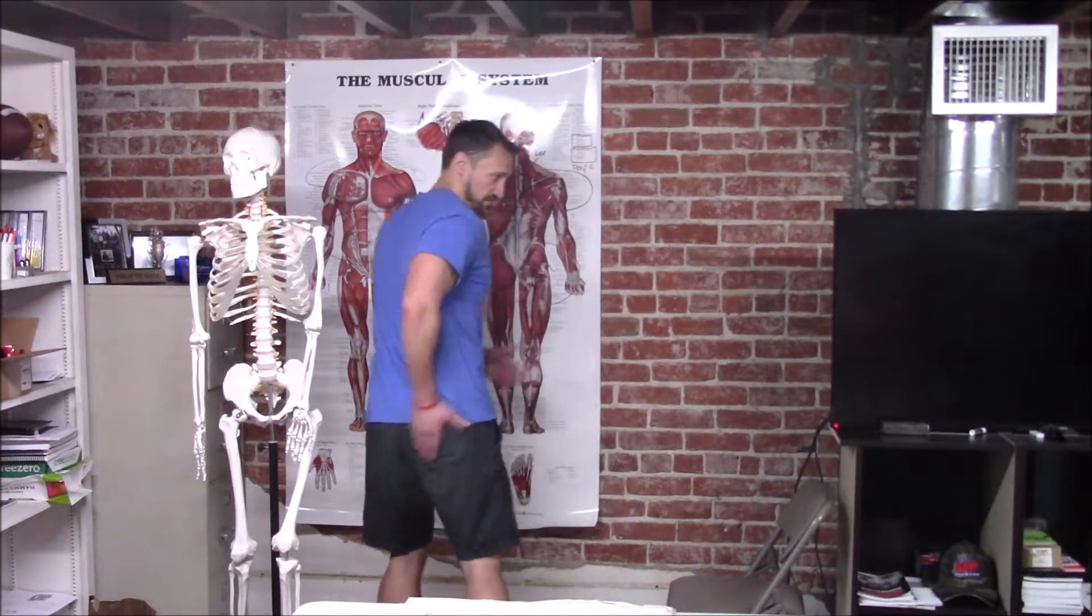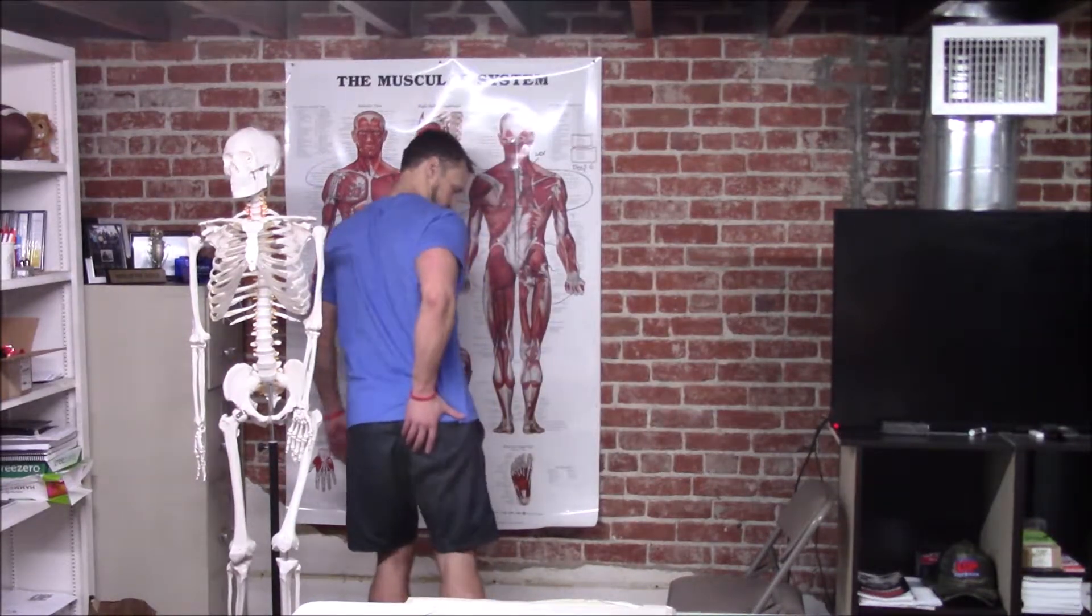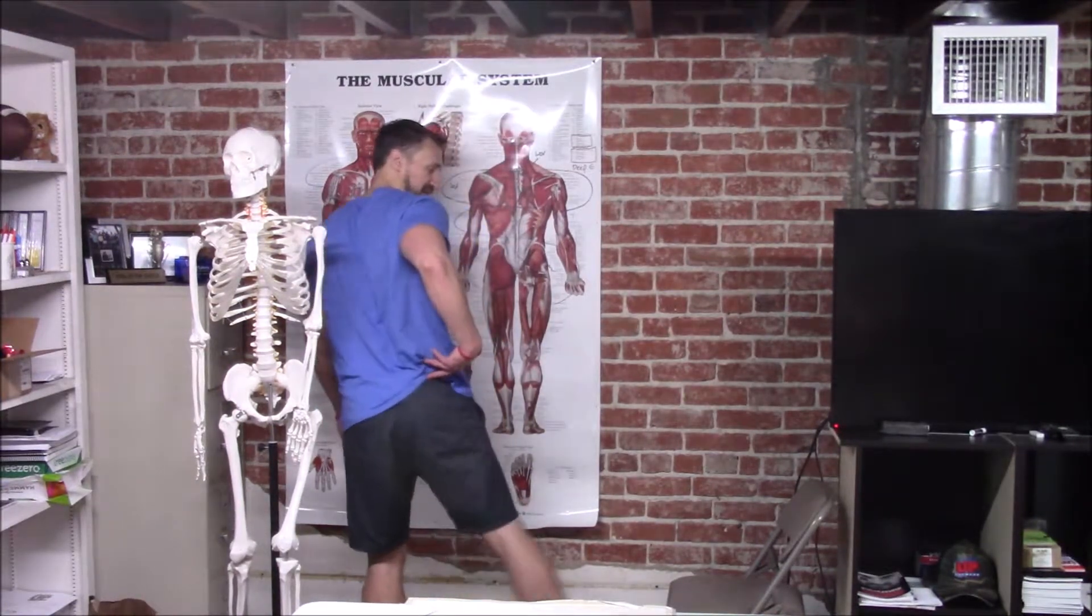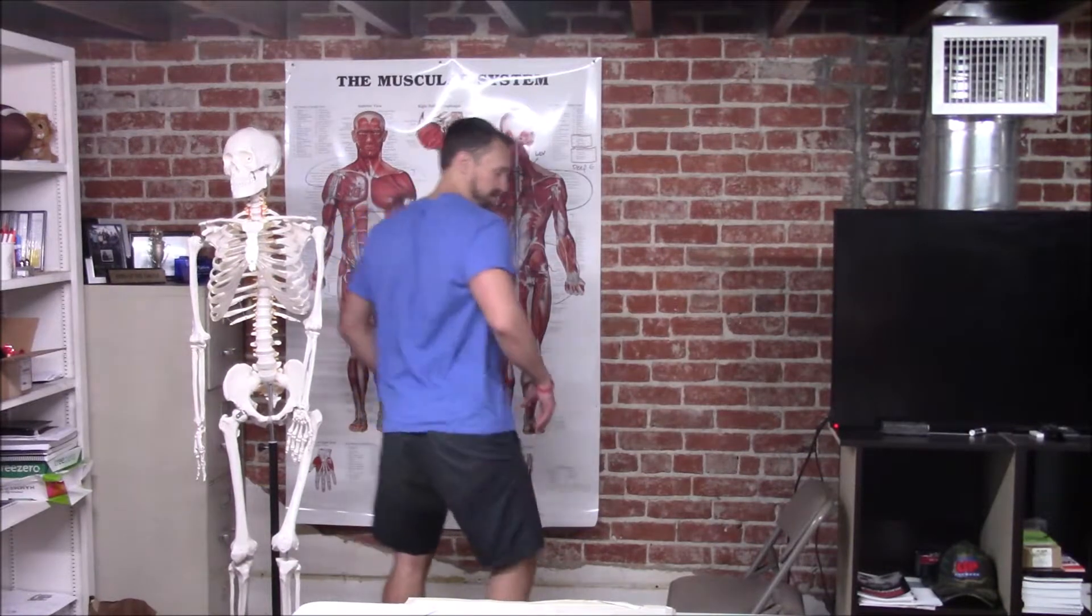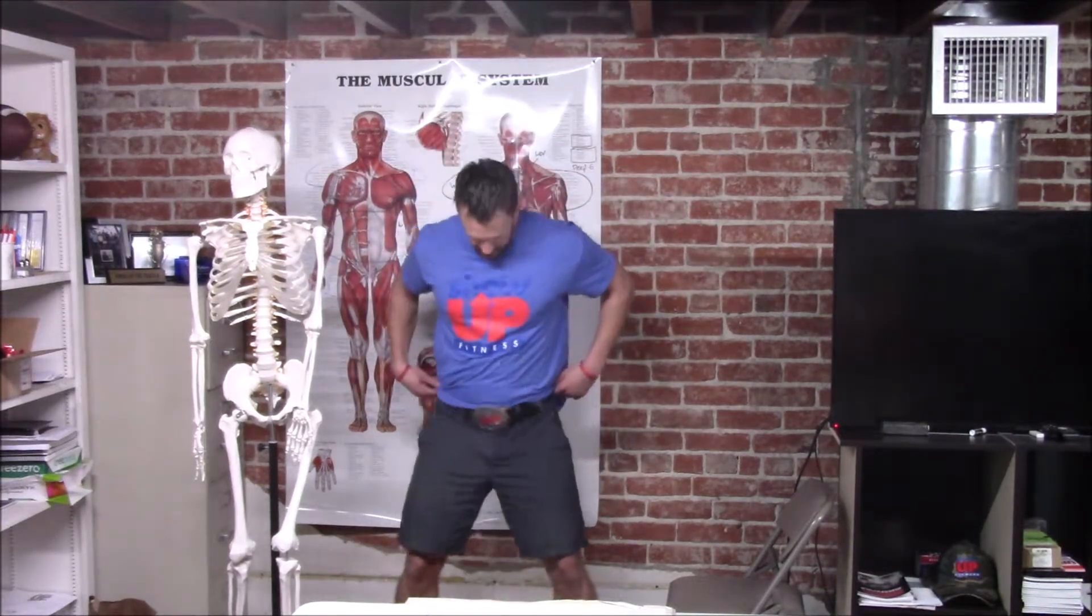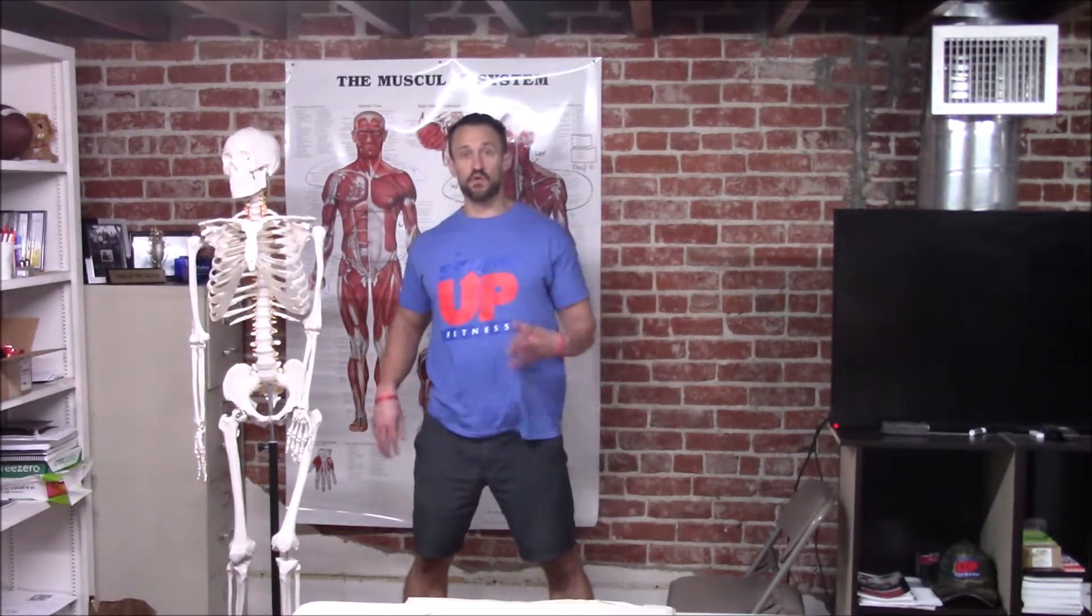Gluteus maximus: big butt muscle. Extension, upper fibers abduct, externally rotate, and then show me your belt buckle—you've got posterior pelvic tilt. Those are the four actions of the glute max. The meat is on the lateral side.